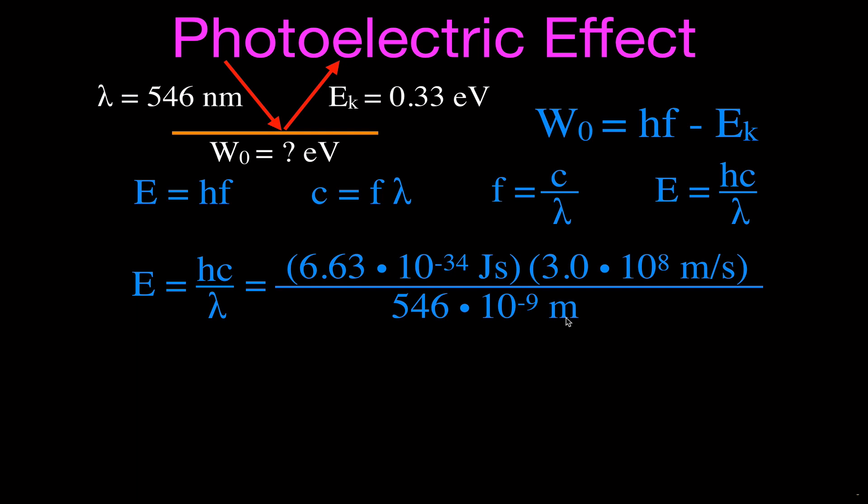Now, the next thing we're going to do is we're going to solve that, and you should notice that this meter cancels with this meter. This second cancels with this second. We're left with joules, so when you use this equation, it's important to remember you don't get electron volts out of that equation. You get the answer in joules, and it's 3.64 times 10 to the minus 19 joules.